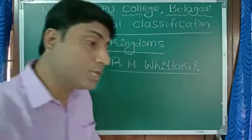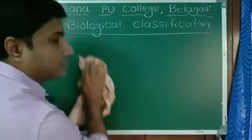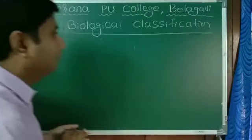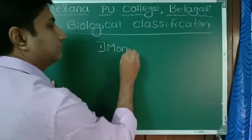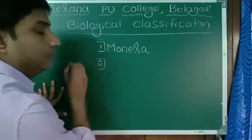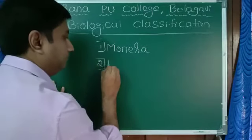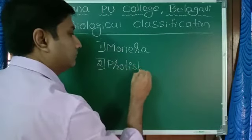Then which are those five kingdoms? Let us see. Those five kingdoms are: first one, Monera. Second one, Protista.